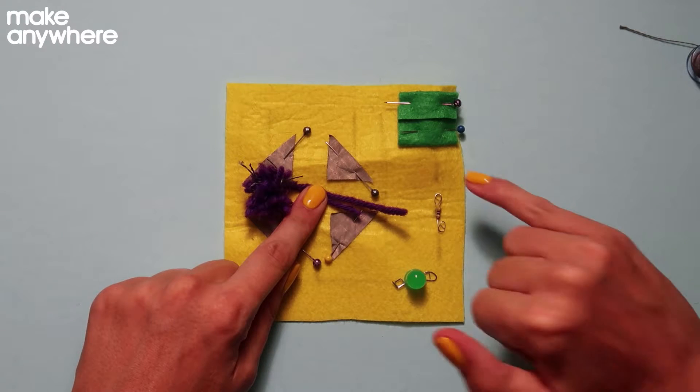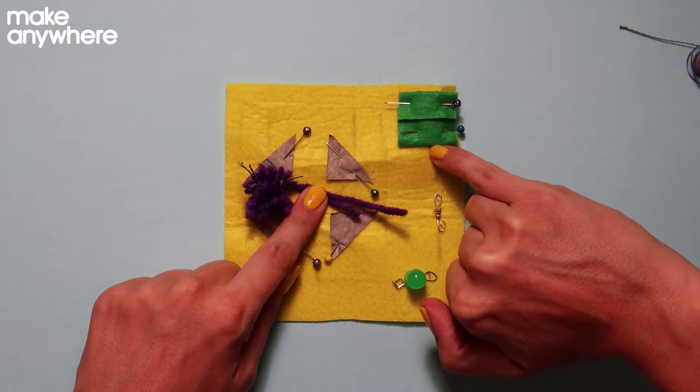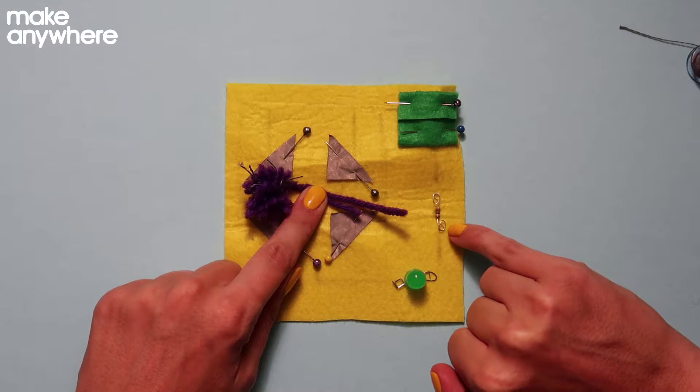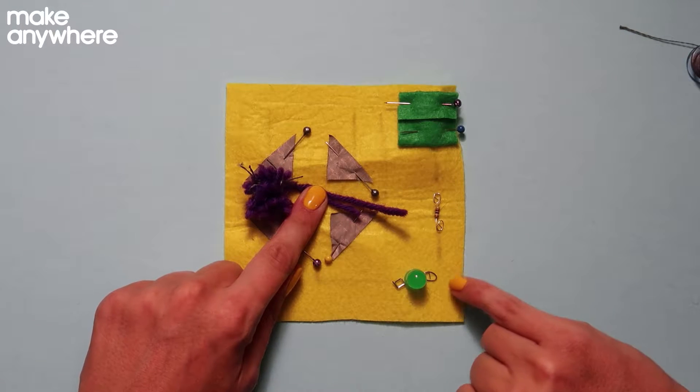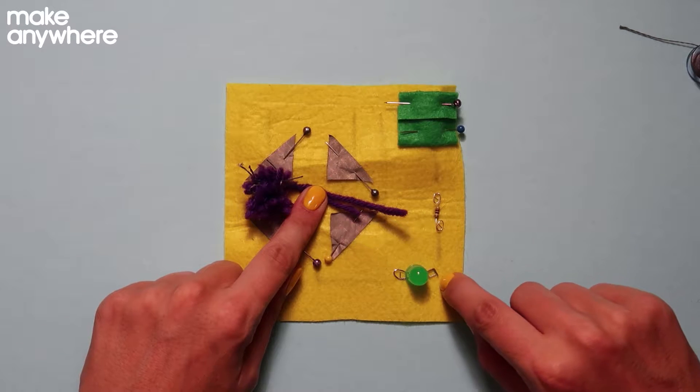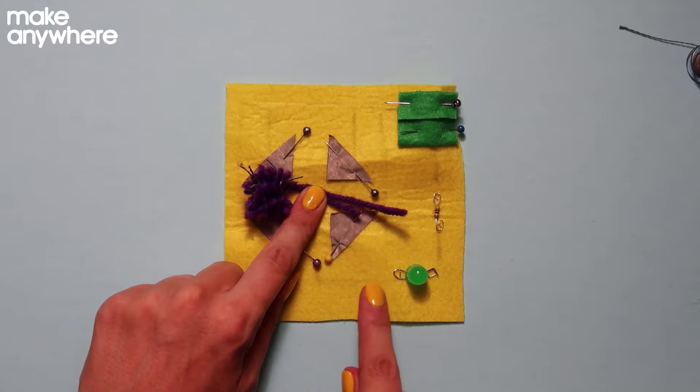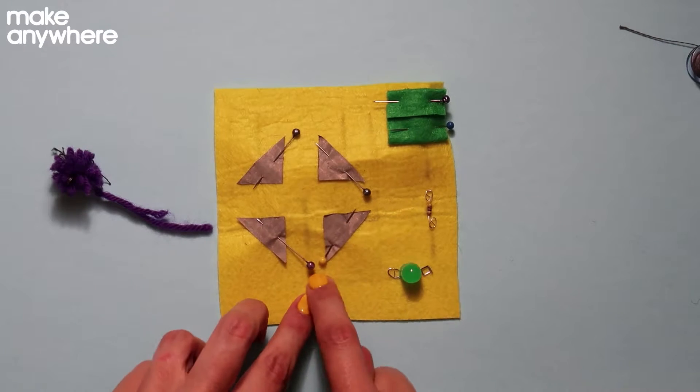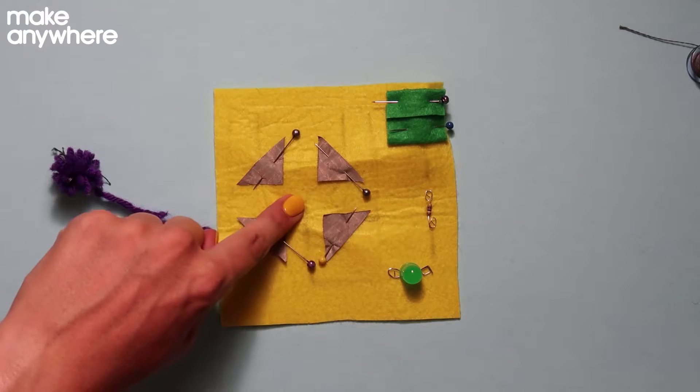So to start with, we're going to go from the battery holder down to the resistor, and then stop and knot off. Then go from the other side of the resistor to the negative side of the LED, and stop and knot off. And then we're going to do another bit, going from the positive side of the LED, up and through the middle, and then stop there.